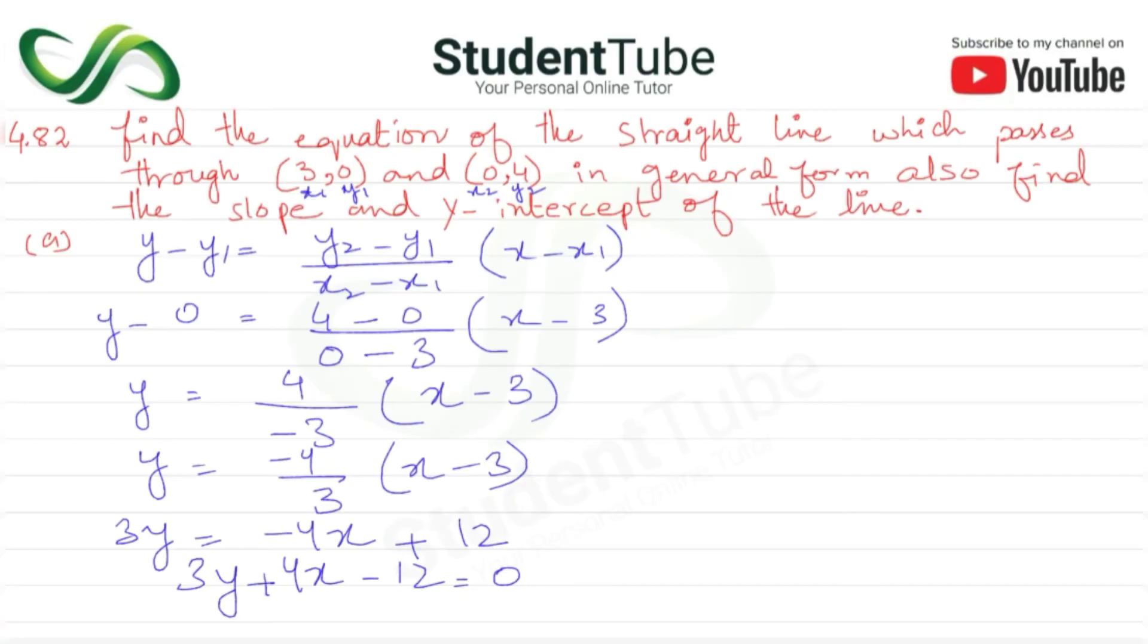Now we need to find the slope and y-intercept. For slope and intercept form, y is equal to mx plus c. We have the equation in general form, which is 3y plus 4x minus 12 is equal to zero.